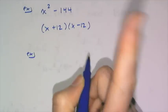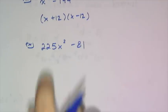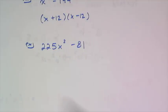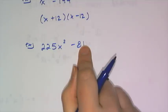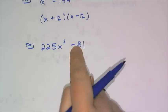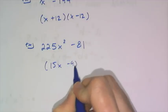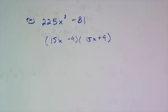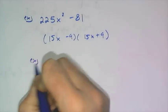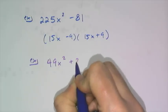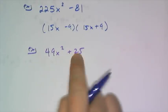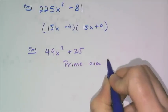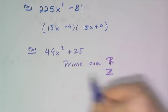For 225x squared minus 81, you need to recognize that 225 is 15 squared and 81 is 9 squared. Since it's a difference, it factors as (15x minus 9)(15x plus 9). Also remember: if you see a sum of squares like 225x squared plus 81, there's no difference — you call it prime over the real numbers, or over the integers.